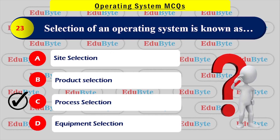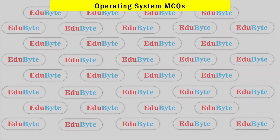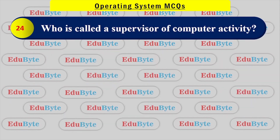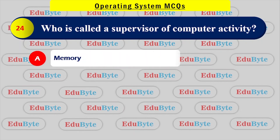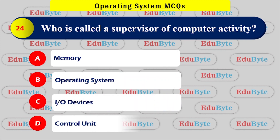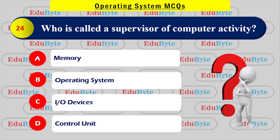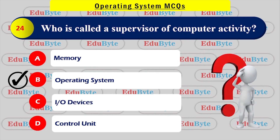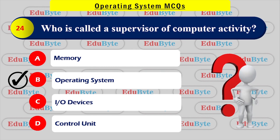Who is called the superior of computer activity? Options: memory, operating system, input-output device, control unit. The correct answer is the operating system — the OS acts as the supervisor and manager of all computer activity.